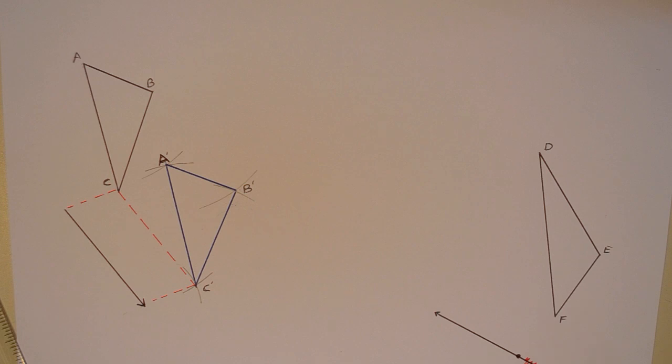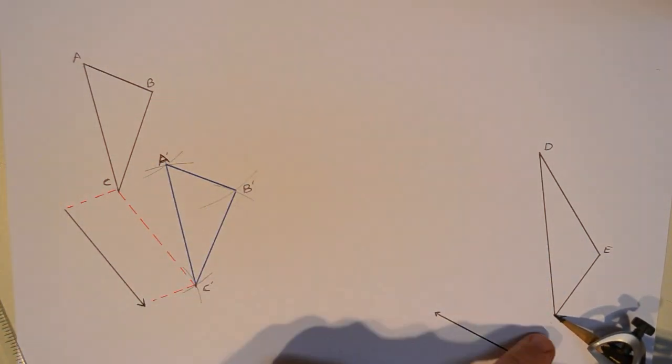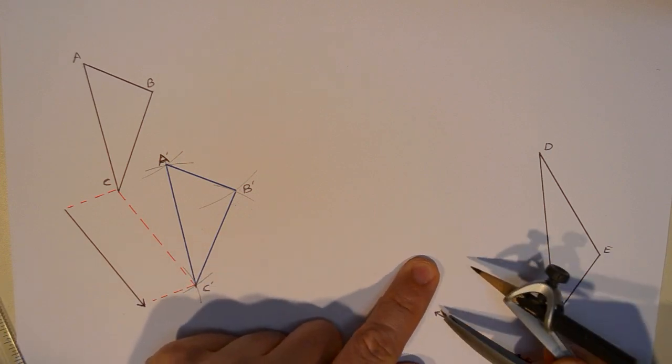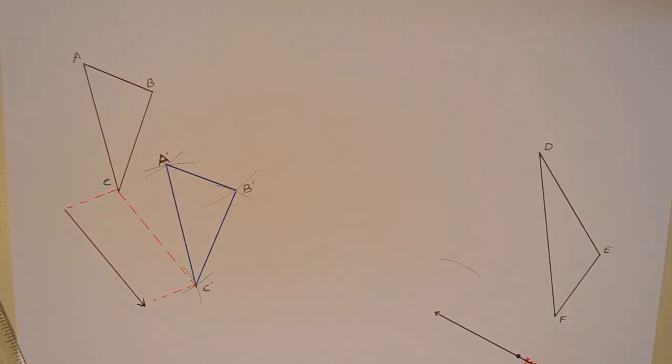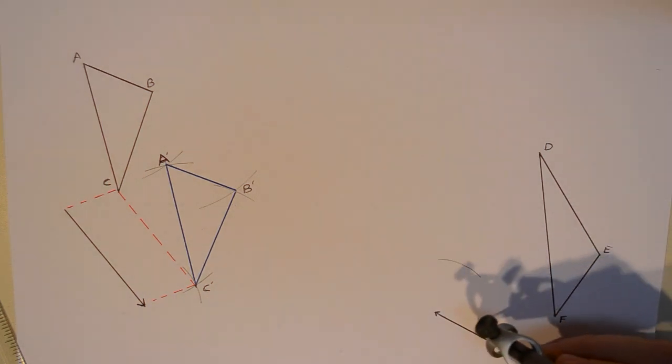So I'm going to do exactly the same thing over here with triangle DEF, but I'm going to translate it along that vector. So up and to the left. I'm going to start the same way. Measure between this point at the bottom of the vector and point F on the triangle. This is going to be my right hand side of my parallelogram. I'm going to make sure that the left hand side is equivalent. So somewhere there is going to be the left hand side of my parallelogram.